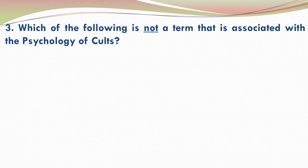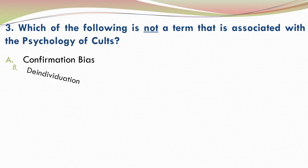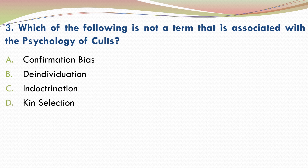Question 3: which of the following is not a term associated with the psychology of cults? The answer is D — kin selection. Kin selection is not a term associated with the psychology of cults.